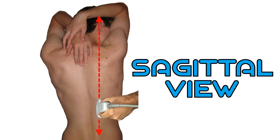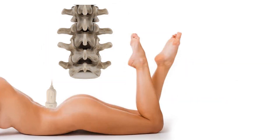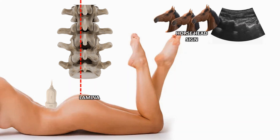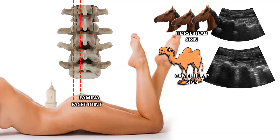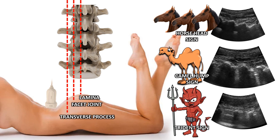Sagittal view. In this view, the long axis of the probe is placed in the sagittal plane lateral to midline, and different views may be obtained depending on the position of the probe. We can recognize the different components of each vertebra, including laminae, facet joints, and transverse processes.